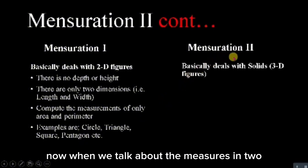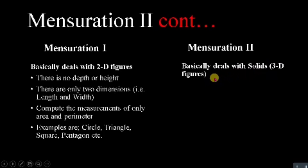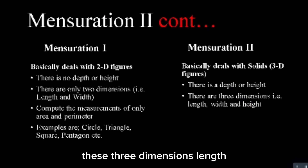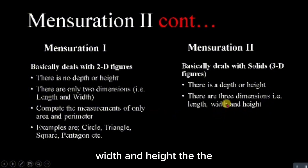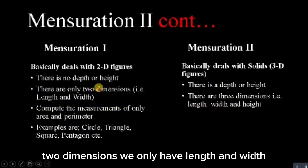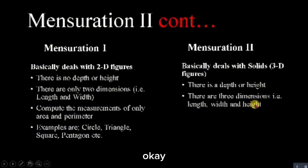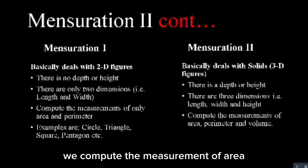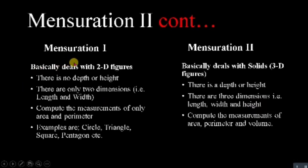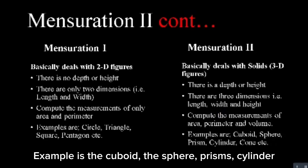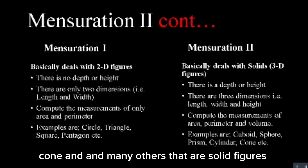Mensuration 2 deals with solid or three-dimensional figures. In this case we have height, that is depth, and there are three dimensions: length, width, and height. Anytime you are dealing with Mensuration 2, you are dealing with these three dimensions. In two dimensions we only have length and width, but in three dimensions we add height. We compute area, perimeter, and volume. Examples of solid figures include the cuboid, prism, cylinder, cone, and many others.